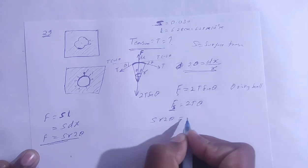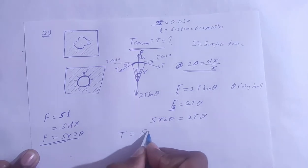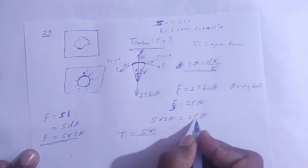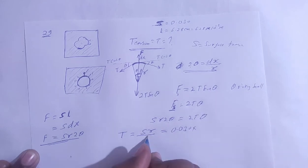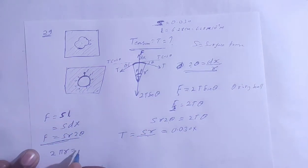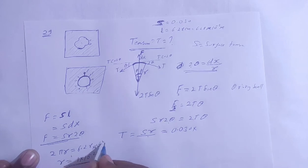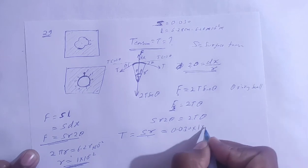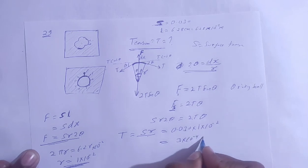Setting the radial force equal to the surface tension force: S × r × 2θ = 2Tθ. The θ cancels out and the 2 cancels out, giving T = S × r. Now, we don't know r directly, but we know the length of the thread loop: 2πr = 6.28 cm. With π = 3.14, we get r = 1 × 10⁻² m. Substituting: T = 0.030 × 1 × 10⁻² = 3 × 10⁻⁴ N.